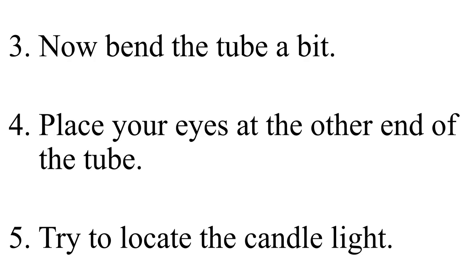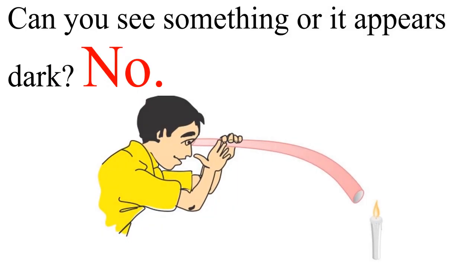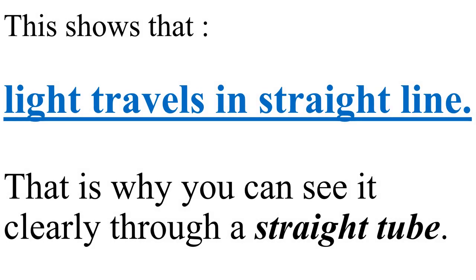Step number three: now bend the tube a little bit. Number four: place your eyes at the other end of the tube. Number five: try to locate the candle light from the other end of the tube — the light will not be visible to us. This shows that light travels in a straight line; that is why you can see it clearly through a straight tube.